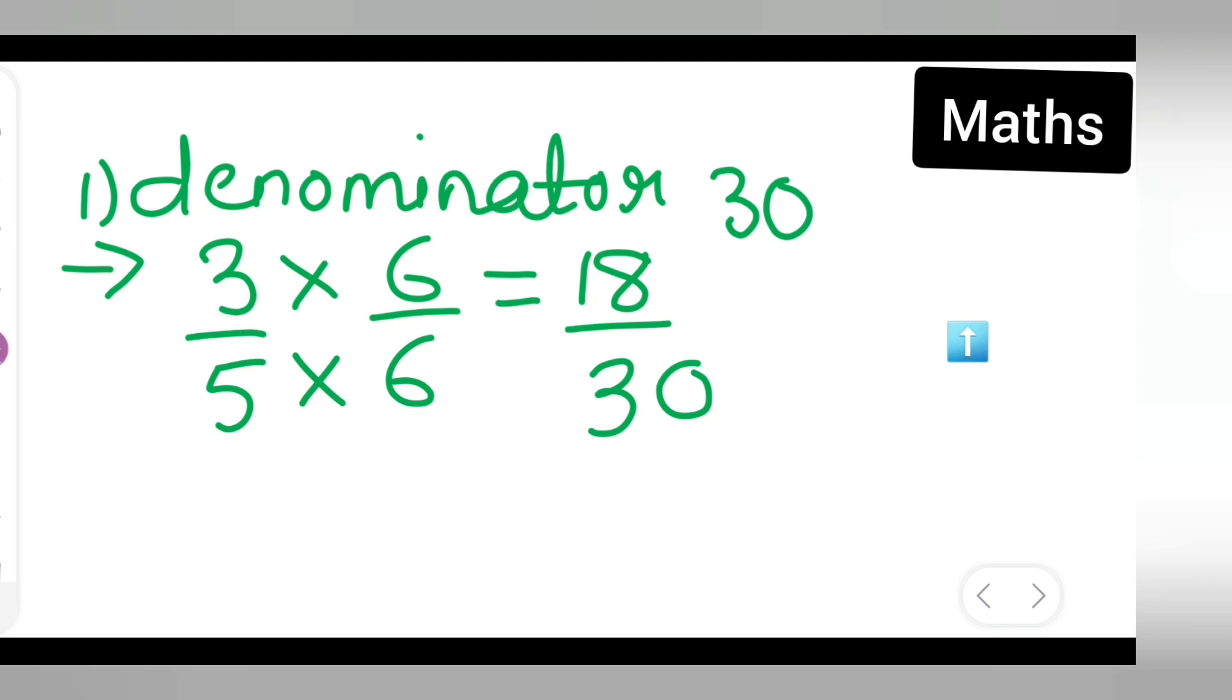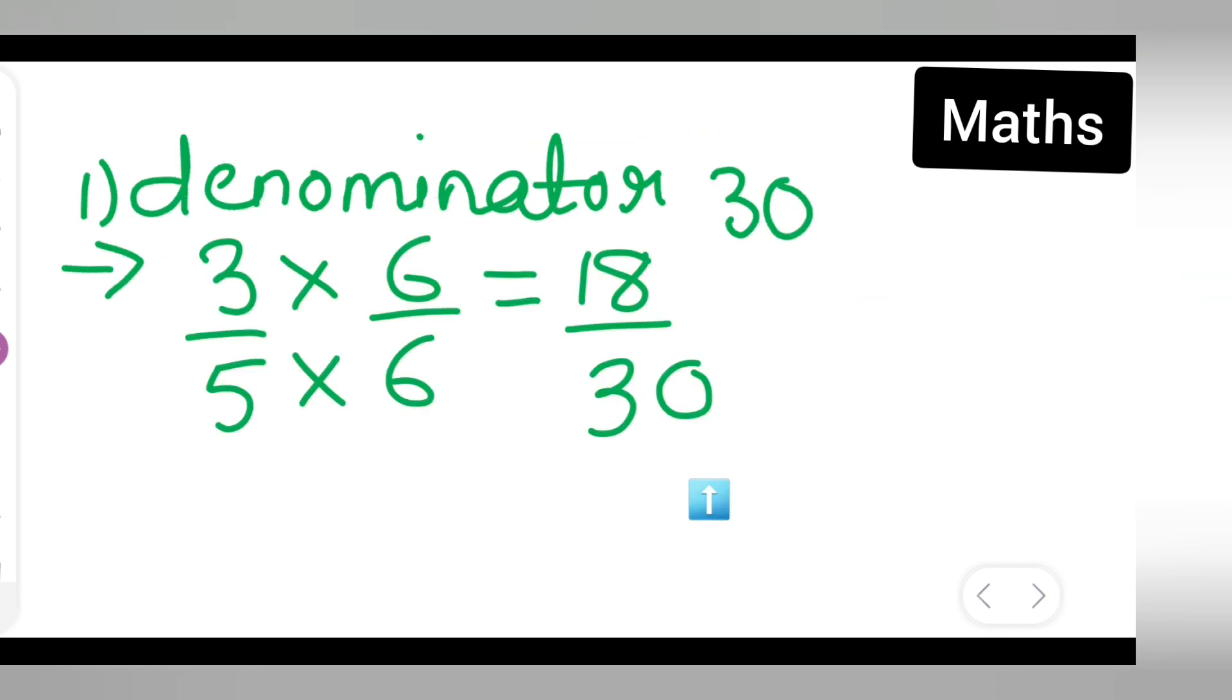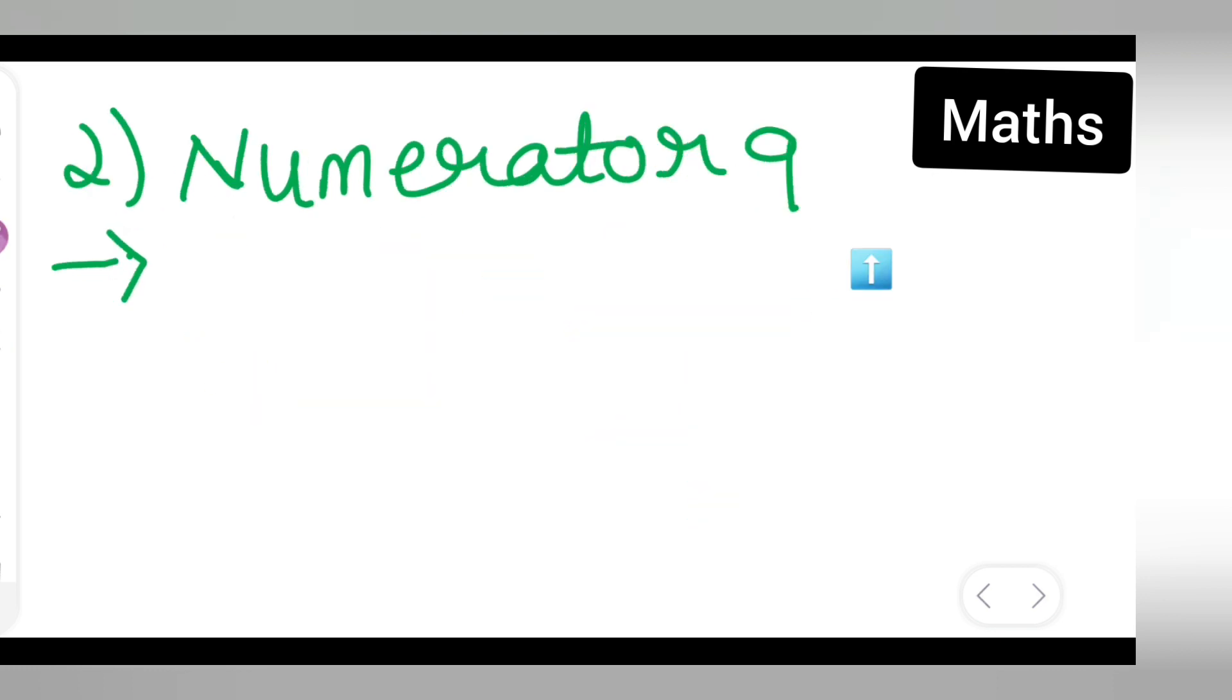Now you want the numerator to be 9. Same thing, write 3/5. You'll have to multiply both numerator and denominator so that you should get 9. So you have to multiply by 3. 3×3 is 9 and 5×3 is 15. So you're getting numerator to be 9 if you multiply both numerator and denominator by 3.